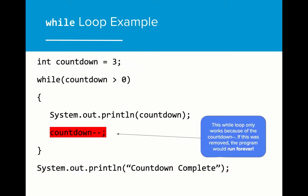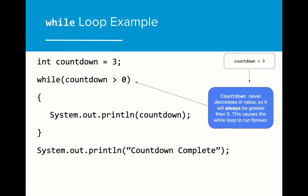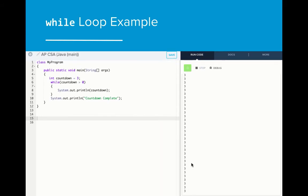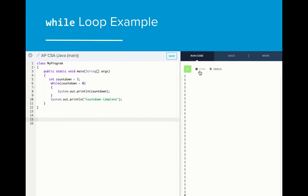This while loop only works because of the countdown minus minus call. If this wasn't included, the program would run forever. If we remove countdown minus minus, then the value of countdown never changes. If the value of countdown is always three, then the while loop condition will always be true, and the program will never stop. When a while loop runs forever, it is referred to as an infinite loop. This generally causes our programs to crash because the compiler isn't prepared to run the program infinitely. When writing while loops, it's important to pay attention to the condition so that the program eventually exits. Notice that the countdown continuously prints the number three as the countdown variable doesn't change in value during the while loop.